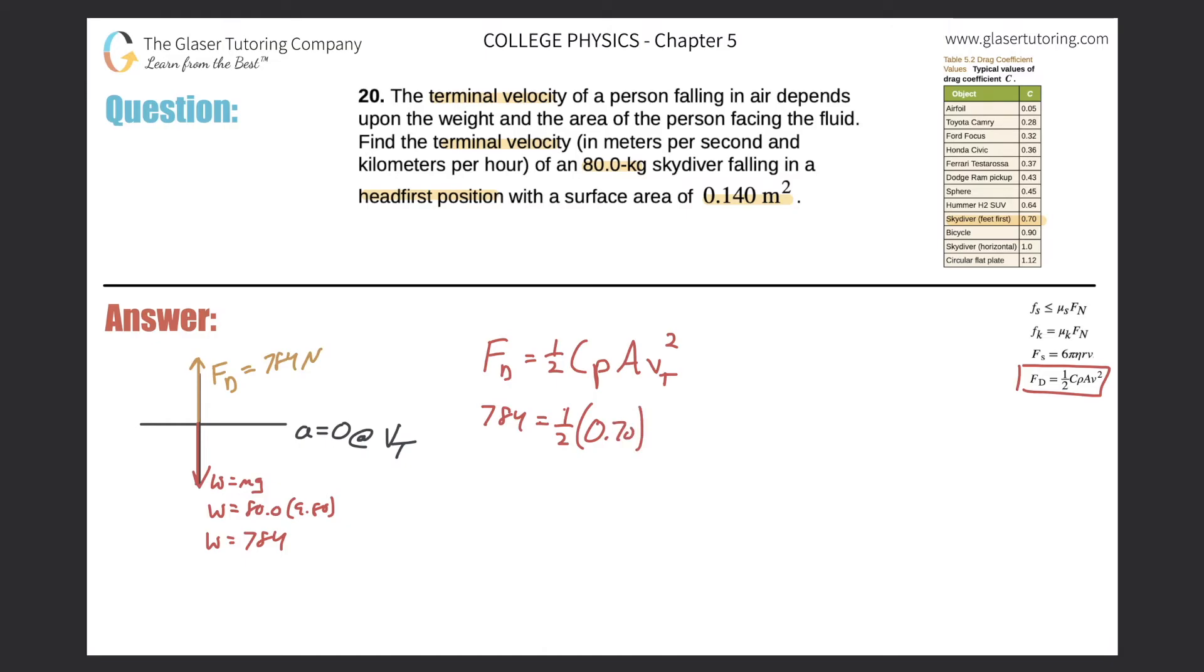So this is going to be 0.70, the density of the fluid. Now this is air. So you have to, I would probably memorize this 1.21. The density is going to be 1.21 kilograms per cubic meter. That is the density of air. So this value is 1.21. And then the area, they told us the surface area was 0.140. So 0.140. And that's multiplied by V_T squared, which represents the terminal velocity. So now why don't we just clean this up a little bit? So take 0.5 multiplied by 0.7 times 1.21 times 0.14. And we get a value of 0.0593 V_T squared.